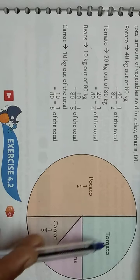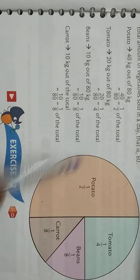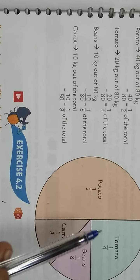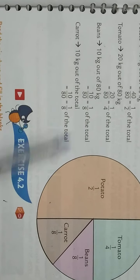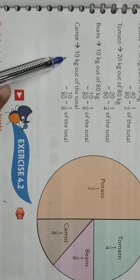That 1 by 4 part is represented here. Beans is 10 out of 80. The total is 80 kg of vegetables. 10 by 80 is 1 by 8, represented here. Carrot is also 1 by 8, so it's represented here as well.